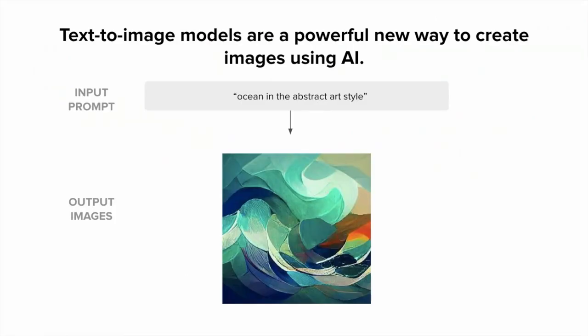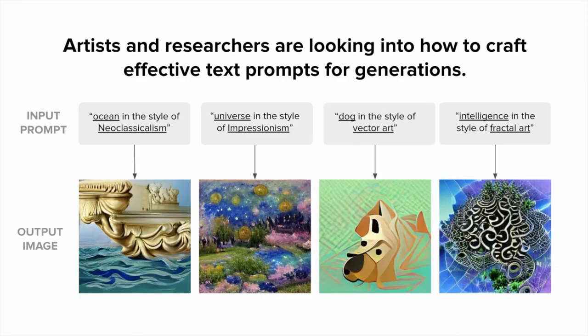The topic of today's talk is text-to-image AI models, which are a powerful new way to create images using AI. These models take text as input and produce images as output. Here's an example of a text prompt and an image that resulted from it—we see an ocean in the abstract art style. Artists and researchers have gotten really excited about this direction, and there's a lot of momentum into crafting effective text prompts.